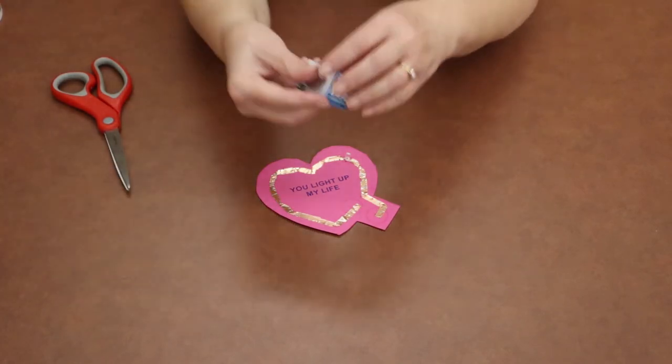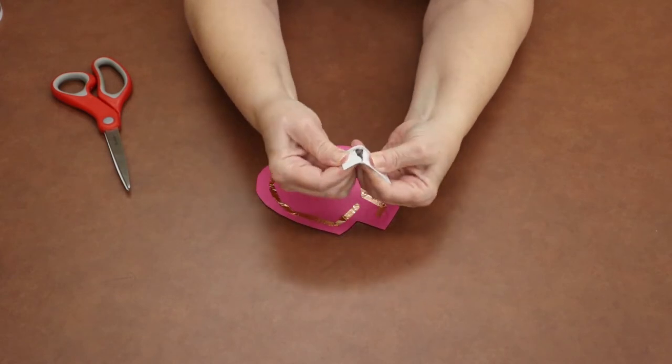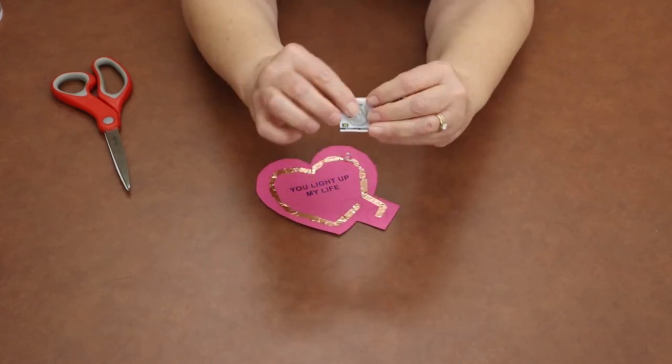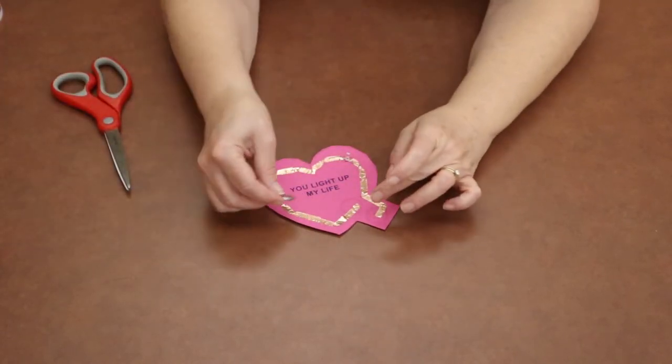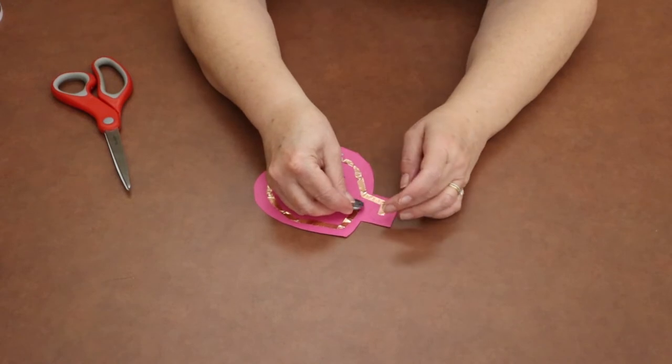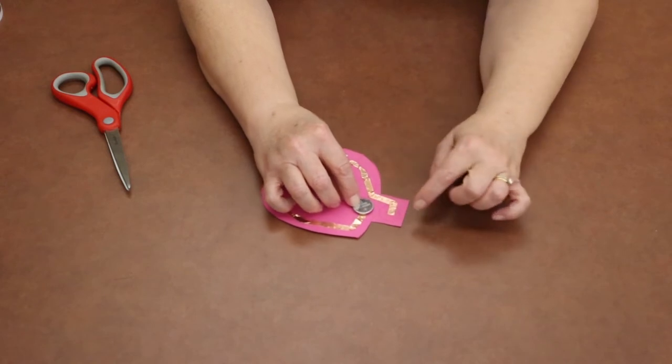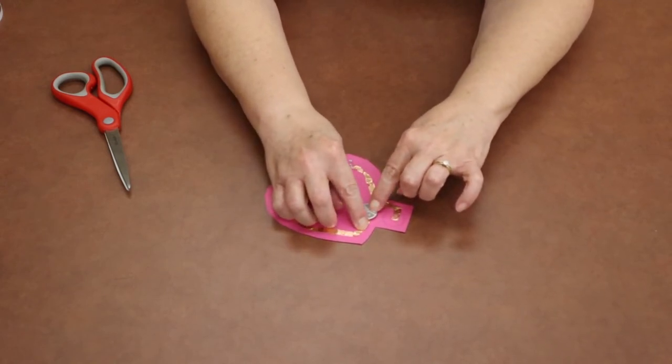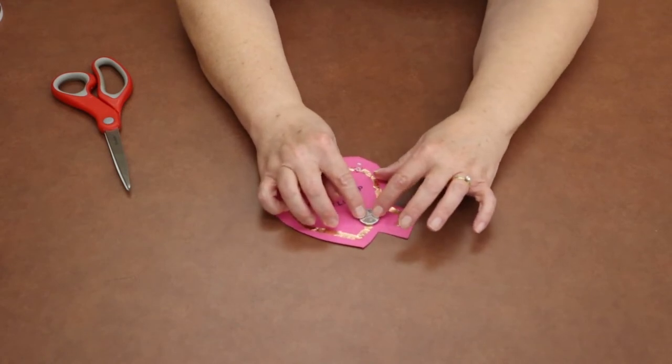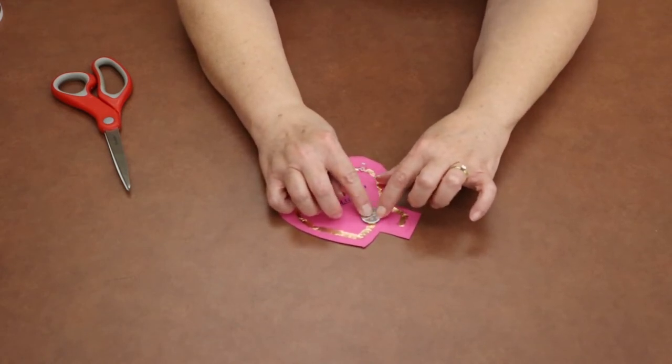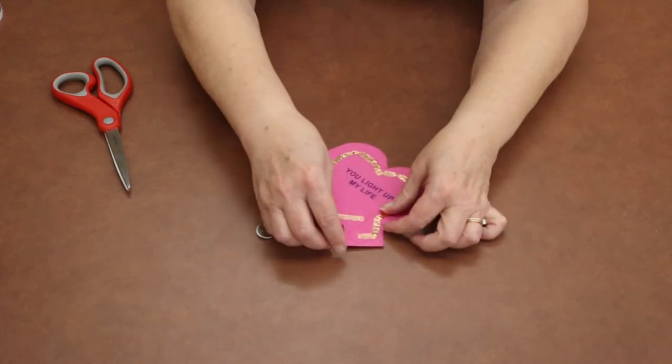The next step will be to take your battery, take it out of the package. If you kind of push on this side, it should pop open. And I'm going to go ahead and test mine before I secure the battery down. So we're going to put the battery here in the spot. When you actually secure it down, you'll want to make sure it's on this side.